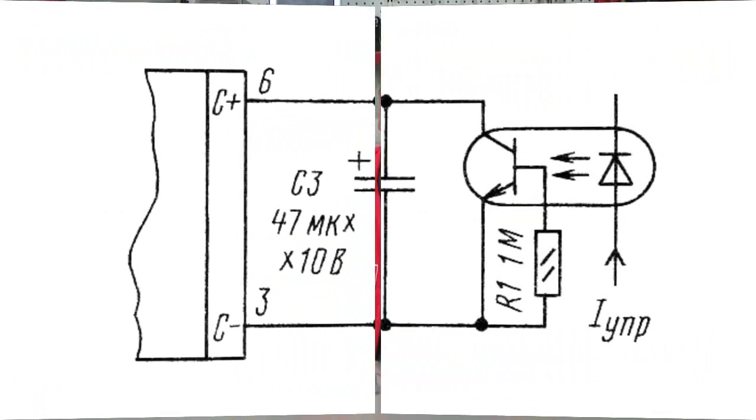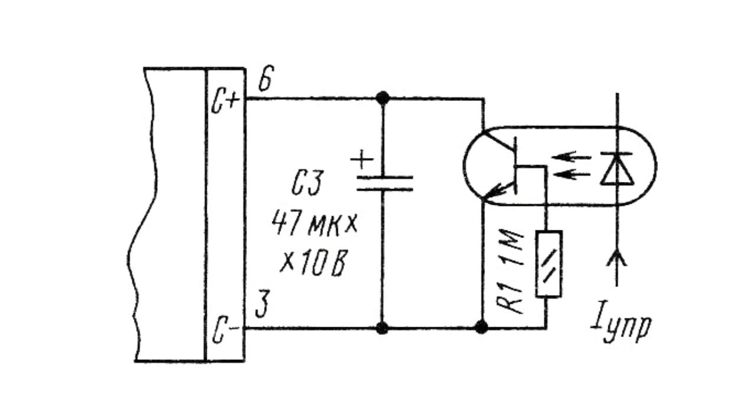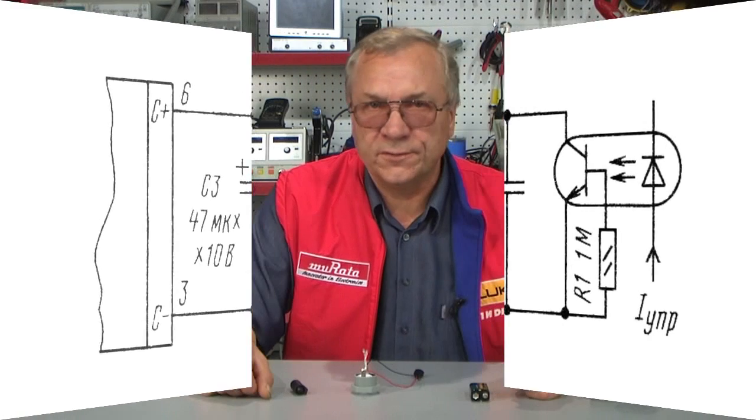Phototransistors are used as photodetectors and solid-state optical couplers. Compared with photodiodes, phototransistors have a significantly greater sensitivity — about 100 mA per lumen. A bipolar phototransistor is similar to a regular bipolar transistor, which has a photodiode between the leads of a collector and base.